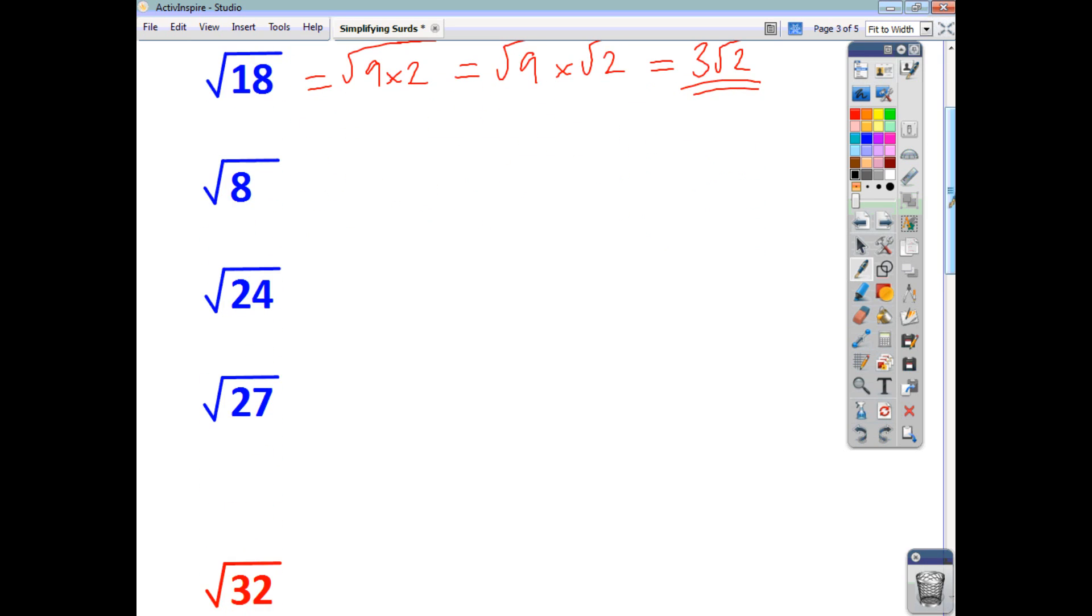Let's have a look at this one. Root 8. Square factors of 8. Remember square numbers 1, 4, 9, 16, 25 and so on. We can see that 4 is a square factor of 8. So we'll write it as root 4 times 2 which is the same as root 4 times root 2. And root 4 is 2 so we write that as 2 root 2. That's our final answer.